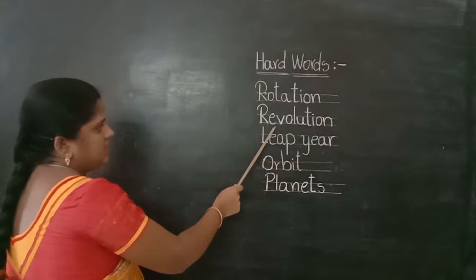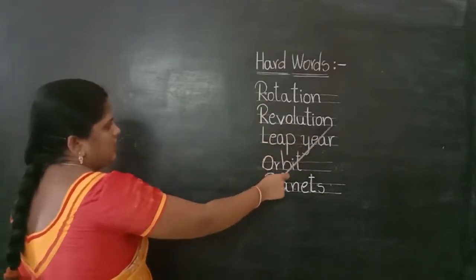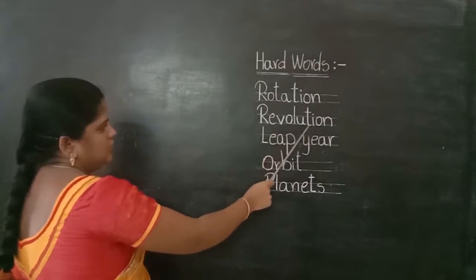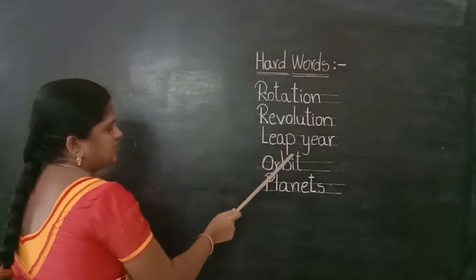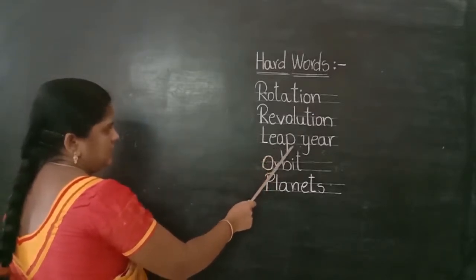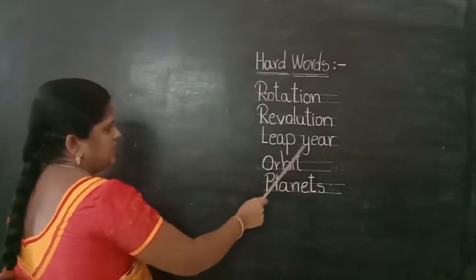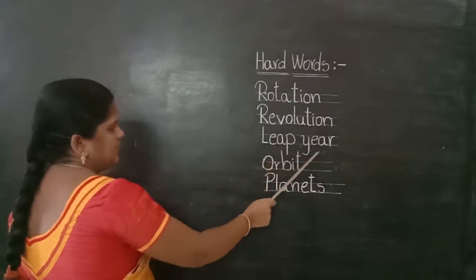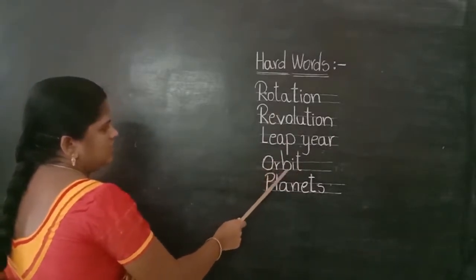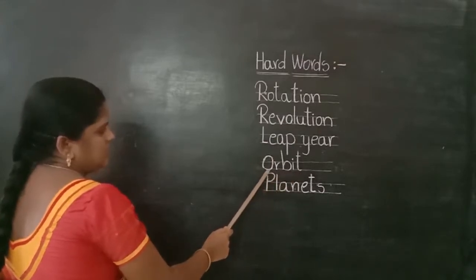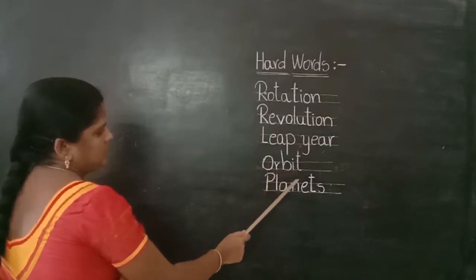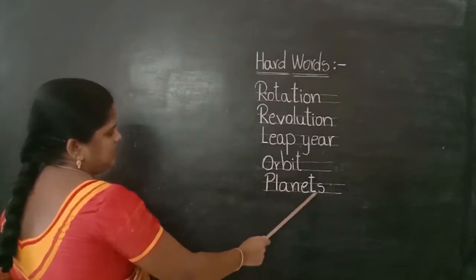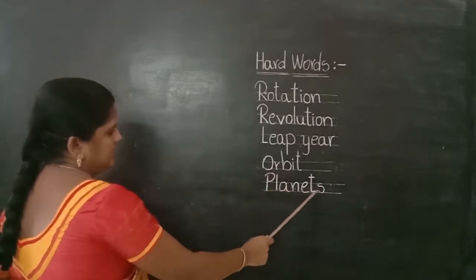Second: revolution — R-E-V-O-L-U-T-I-O-N. Third: leap year — L-E-A-P Y-E-A-R. Fourth: orbit — O-R-B-I-T. Fifth: planets — P-L-A-N-E-T-S.